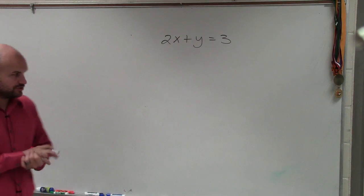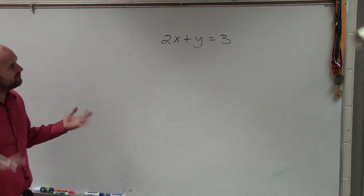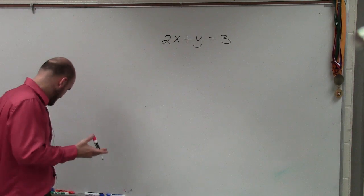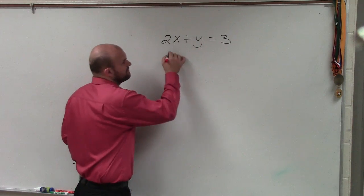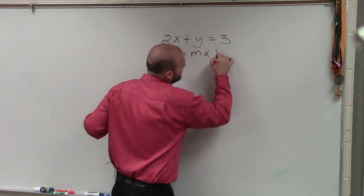So what we want to do, there's two different ways to kind of graph. The most important way as far as our graphing is to rewrite this in slope-intercept form. Remember, slope-intercept form is y equals mx plus b.